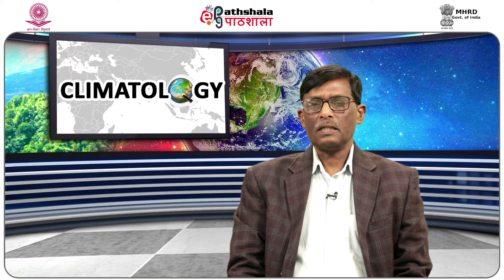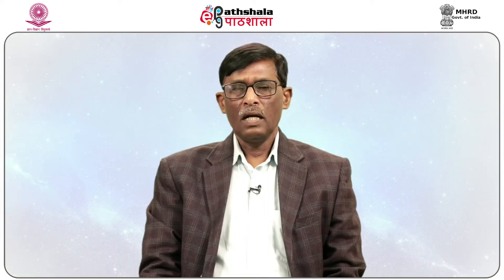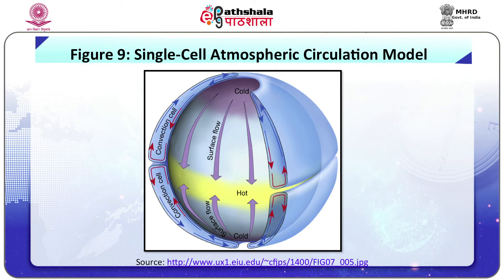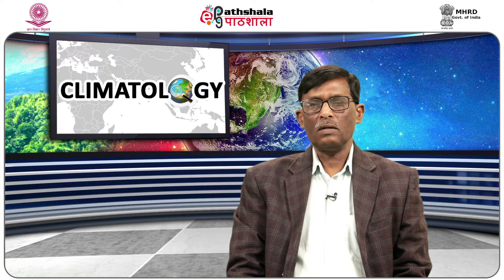Now let us discuss planetary atmospheric circulation. At the planetary scale, atmospheric circulation is divided into two groups: the single-cell atmospheric circulation model and the three-cell atmospheric circulation model. The single-cell refers to the cycling of air at a global scale, divided at the equator, so one cell is found in each hemisphere. Its occurrence is now debatable.